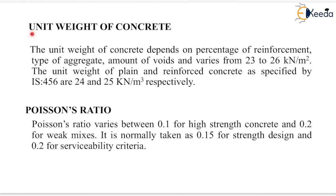The next property is unit weight of concrete. The unit weight of concrete depends on the percentage of reinforcement, type of aggregate, and amount of voids, and varies from 23 to 26 kN per m³. The unit weight of plain and reinforced concrete as specified by IS 456 are 24 and 25 kN per m³ respectively. 24 kN/m³ is taken for plain cement concrete and 25 kN/m³ for reinforced cement concrete.